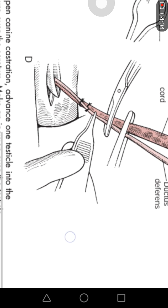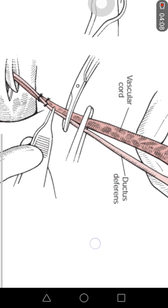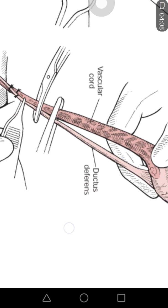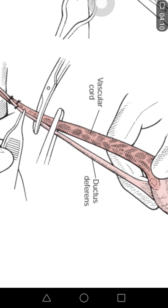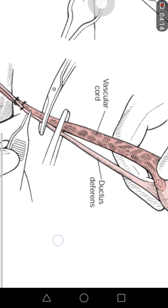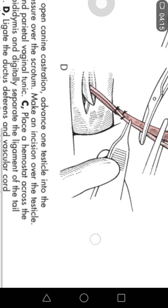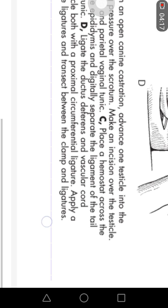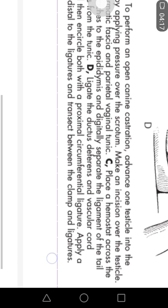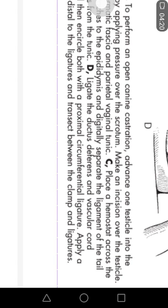After double ligation, as you can see in this picture, the extra part of the spermatic cord is removed along with the testis. In this way, the operation is completed. This is the most commonly used technique for castration in dogs.